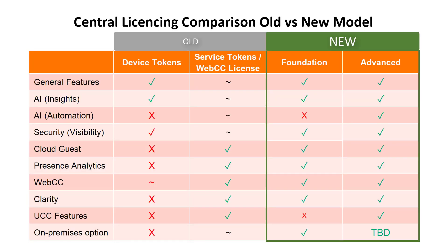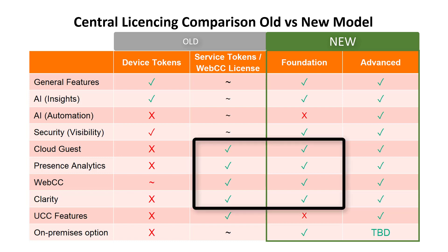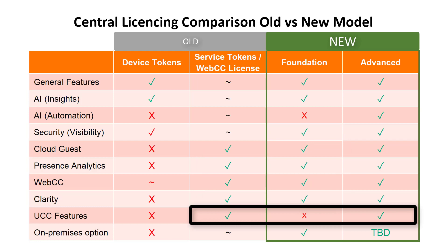This is how the two new licensing models compare with respect to feature inclusions. You can see that the new foundation license includes Cloud Guest, Presence Analytics, WebCC, and Clarity — functionality that was originally licensed using the additional service tokens. Please note, you'll have to upgrade to the advanced license if you require UCC functionality.